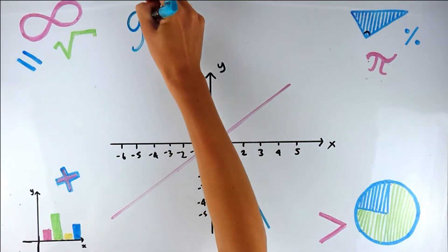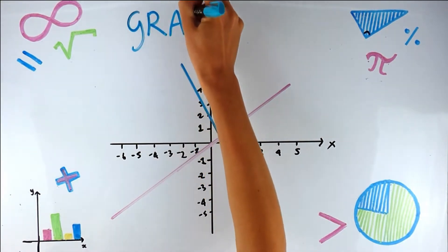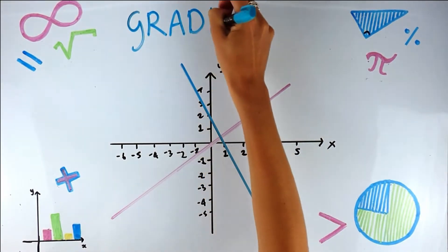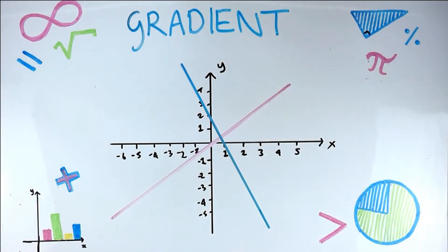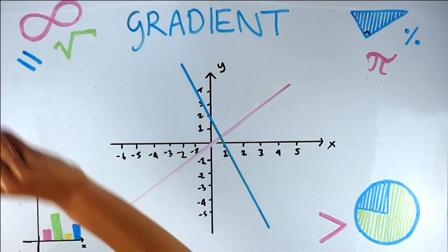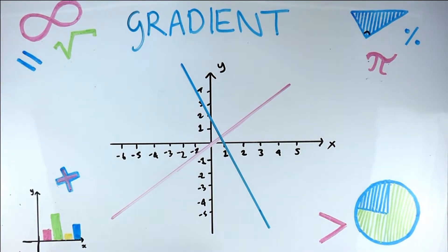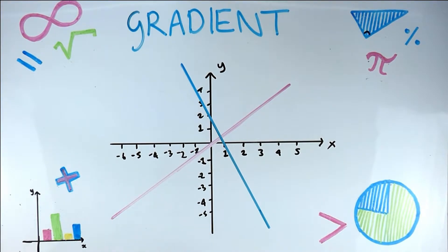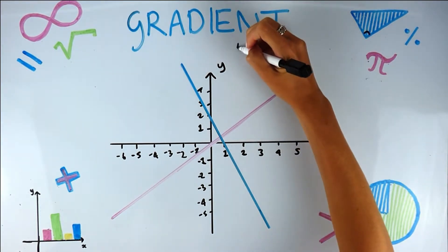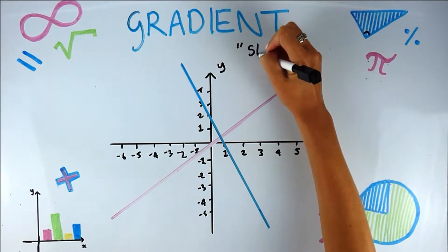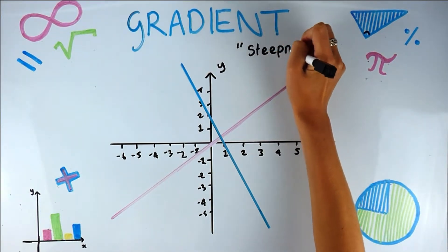Let's look now at the gradient of a line. In this video we're going to specifically look at gradients of straight lines. Straight lines are all around us — at the ceiling, the carpet, wherever you are. If we think of the term gradient, which is a mathematical term, and translate it into English, our definition would be: steepness.